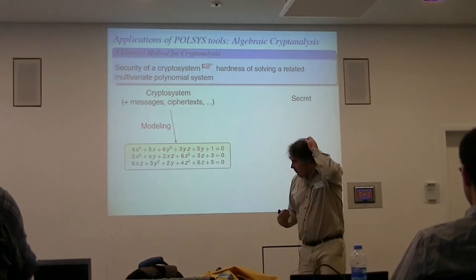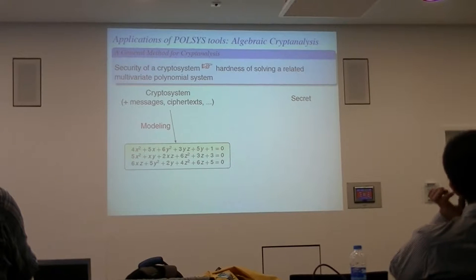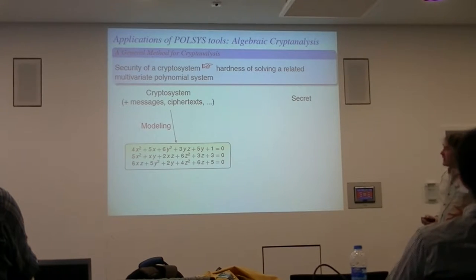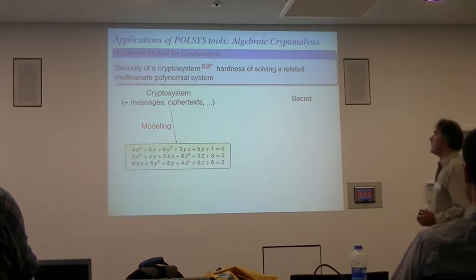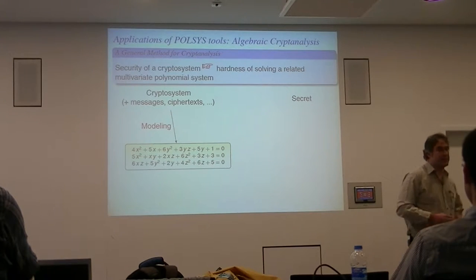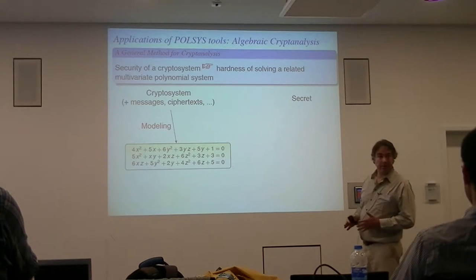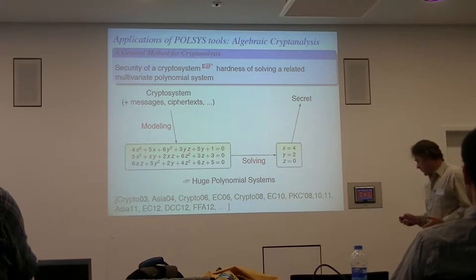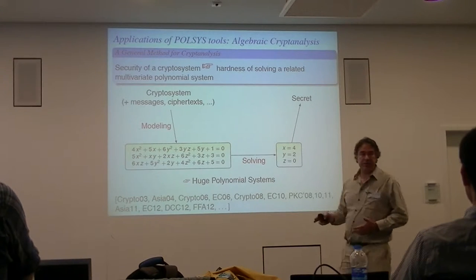In my team, we want to solve polynomial equations coming from applications. One big field of applications is cryptography, and one general method to assess the security of a cryptosystem is called algebraic cryptanalysis. You have a cryptosystem, you model it using polynomial equations — you can always do that. For instance, even if you try to model the problem of factorizing integers, you can derive some algebraic equations. Then you need to solve this system, evaluate the complexity, and recover, for instance, the secret key.